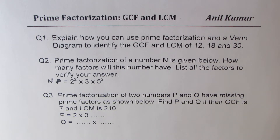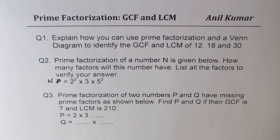Question number three: prime factorization of two numbers P and Q have missing prime factors as shown. Find P and Q if their greatest common factor is 7 and LCM is 210. I would like you to pause the video, answer all these questions, and then look into my suggestions.